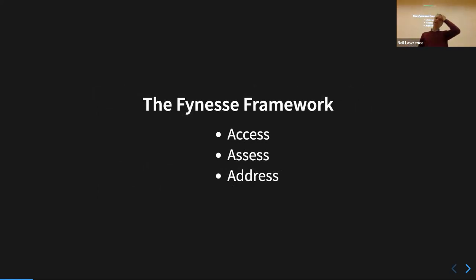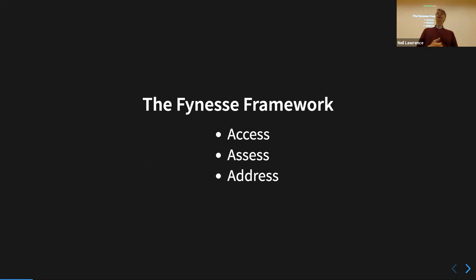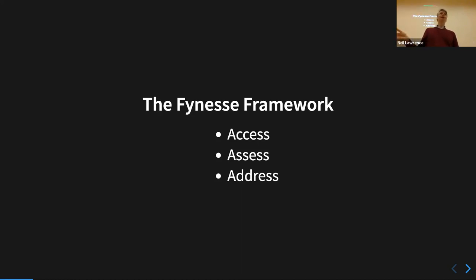What I'm going to introduce today is what I call the FINESSE framework — a framework I'm going to suggest you use. If you're doing a data science project, it has three aspects: access, assess, and address. I call them aspects, not stages, purposefully. They are somewhat ordered — access is like lab one, assess is like lab two, and you'll start address in practical three. In the assignment, access is roughly question one, assess is roughly question two, and address is roughly question three.